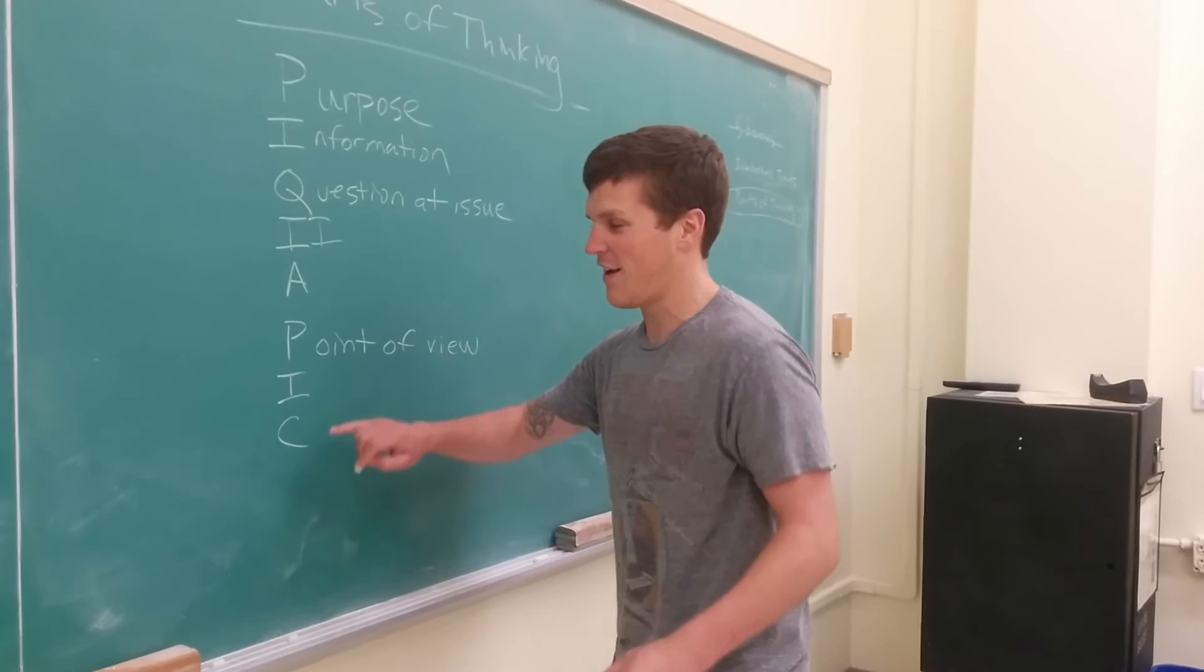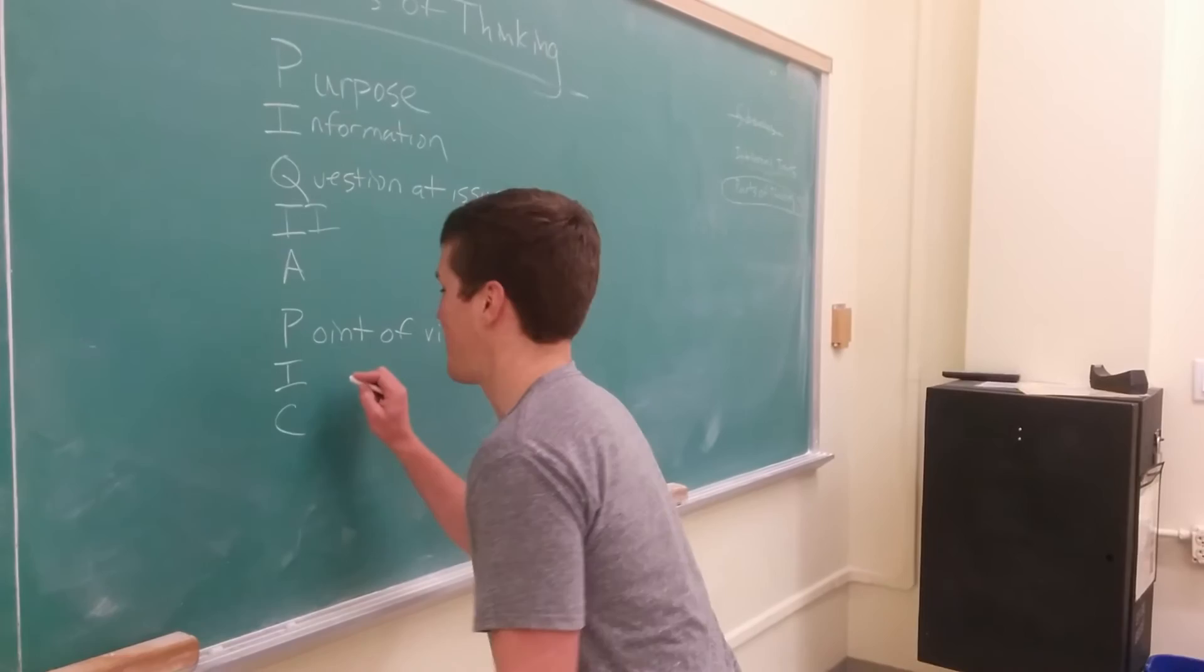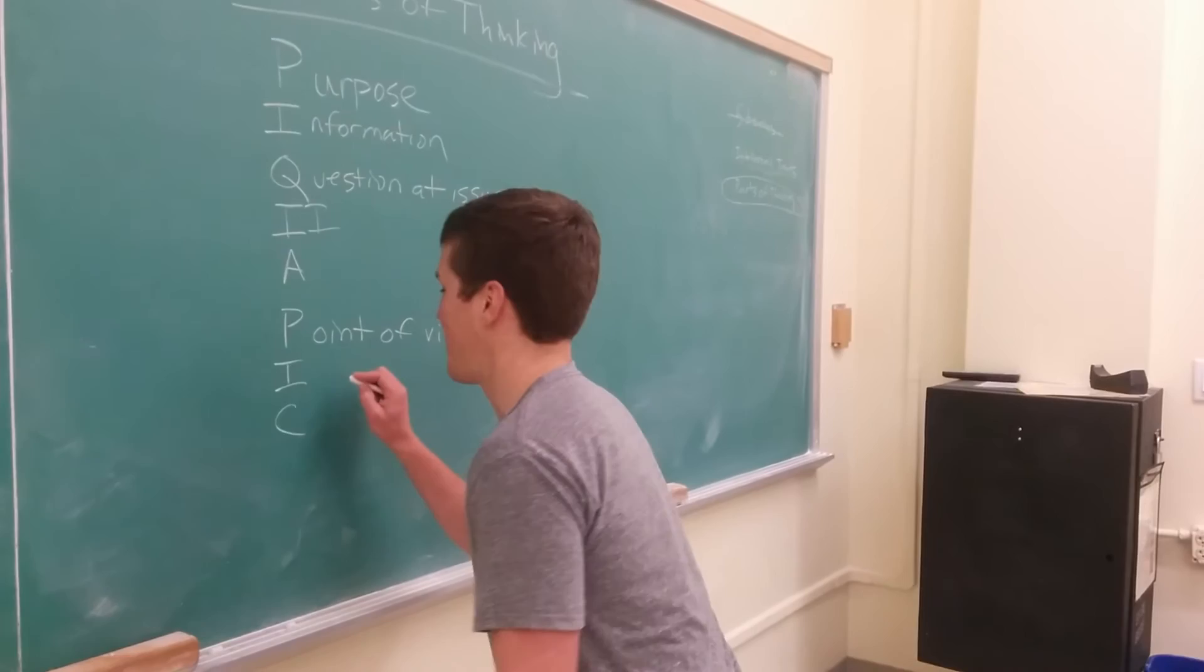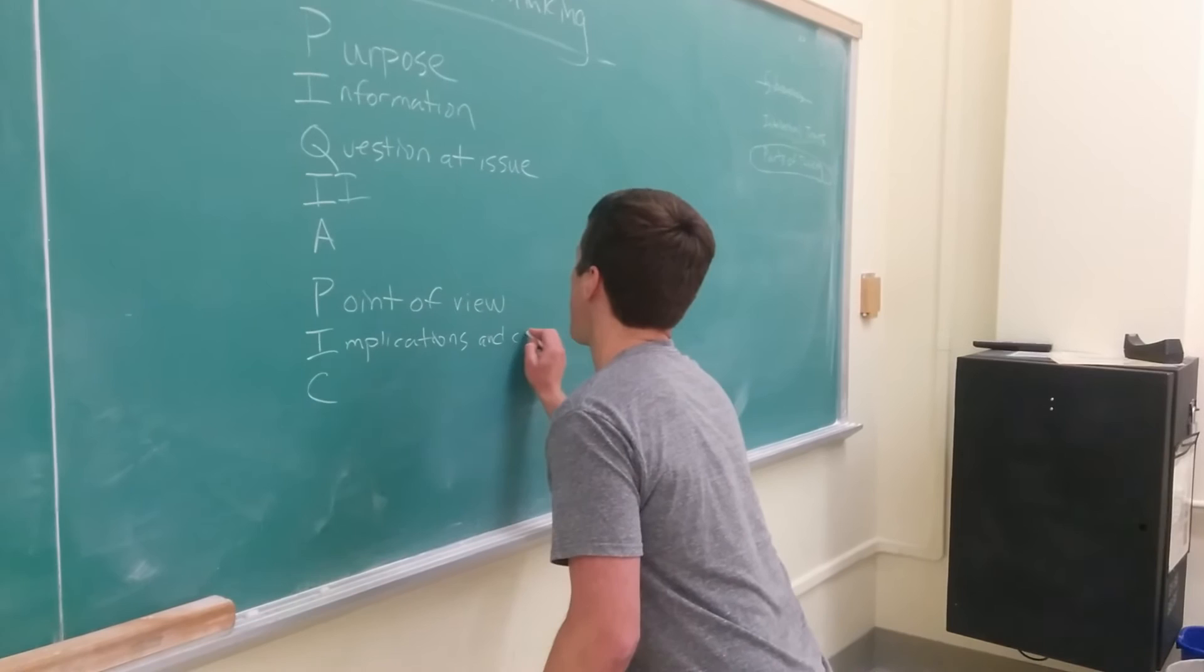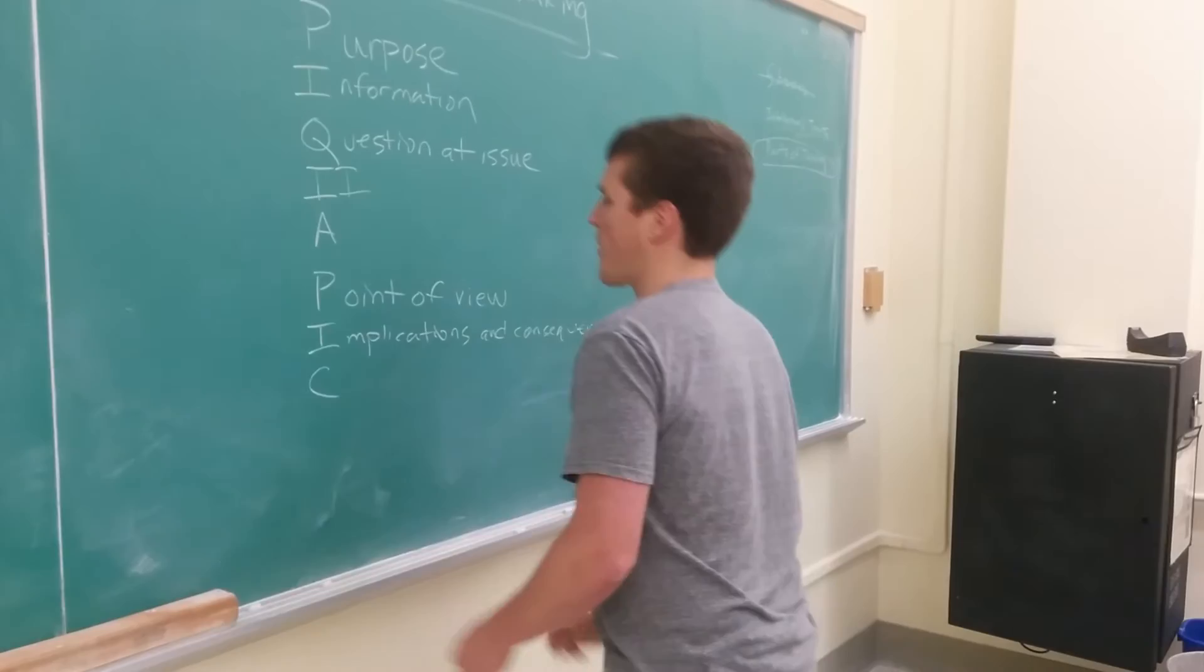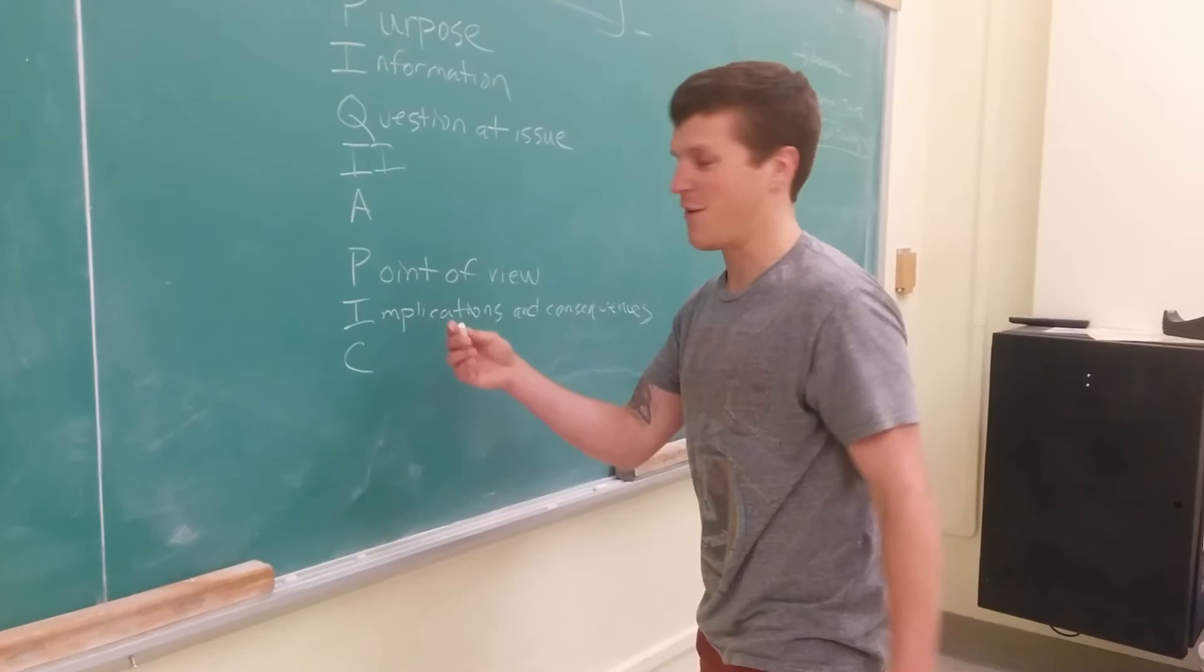The nice part about the PIC is the I and the C. The I is Implications and Consequences. Except you need something else for the C. The C just has to be some sort of Concept that your point of view and your implications and consequences have to be about.